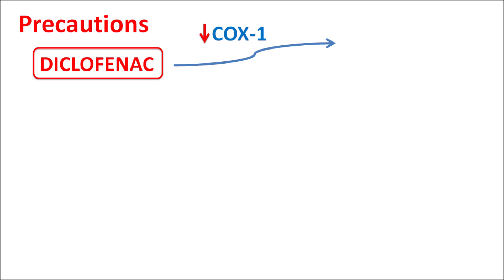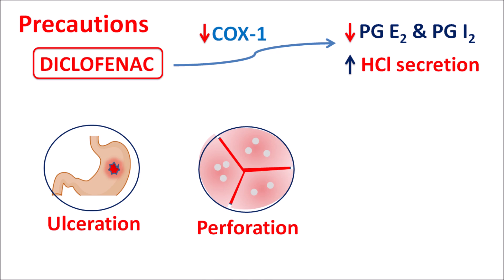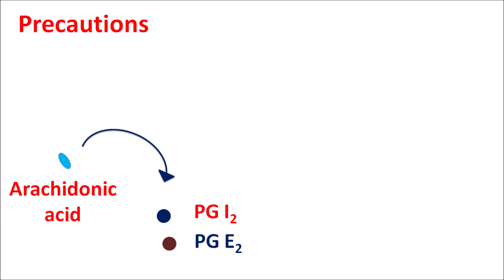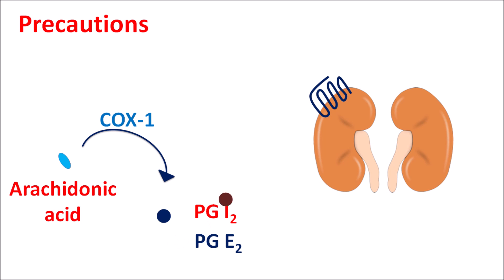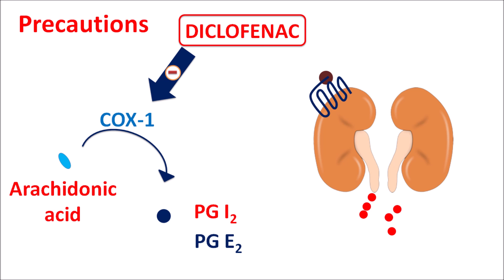Diclofenac inhibits COX-1, thereby inhibiting the synthesis of prostaglandin E2 and PGI2 at the stomach, which reduces control on acid secretion, resulting in increased gastric acid secretion leading to ulceration, perforation, and gastrointestinal bleeding. At the renal system, COX-1 normally converts arachidonic acid into PGI2 and PGE2, which increase glomerular filtration and excretion rate. Diclofenac inhibits COX-1, reducing the glomerular filtration rate.